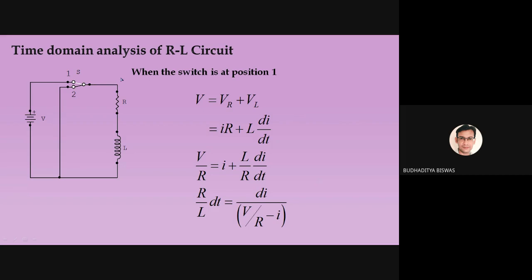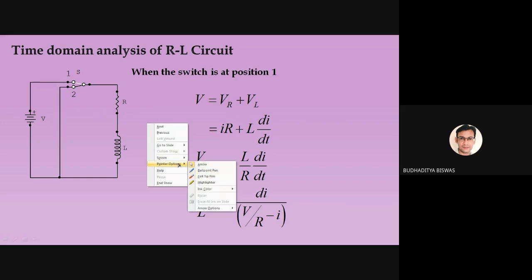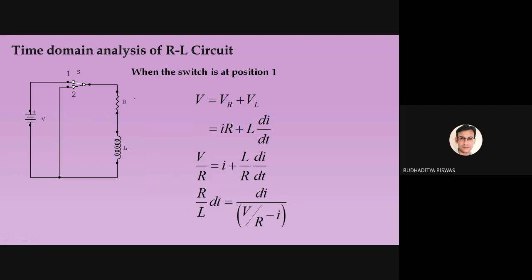First, the time domain analysis of the RL circuit. It is called RL because one resistance and one inductance are present in the sample circuit. We use capital L to denote inductance and capital R for resistance. One voltage source is connected across these two series-connected components, and this is controlled by a switch with two poles.